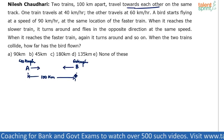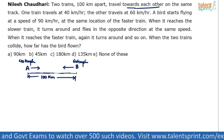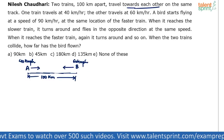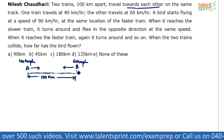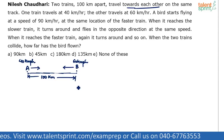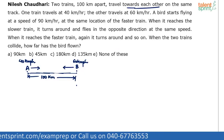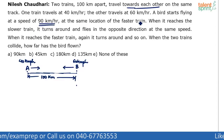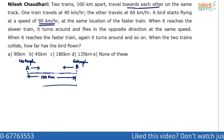Since they are traveling on the same track, they will collide at some point. A bird starts flying at 90 kilometers per hour from the location of the faster train — Train B. The bird flies from B towards A, but it doesn't have to cover the full 100 kilometers, because by the time it reaches Train A, Train A has already traveled some distance towards it.